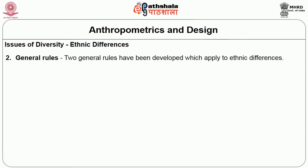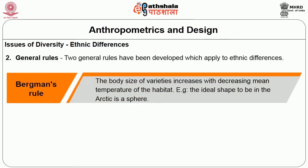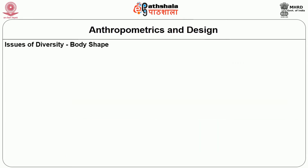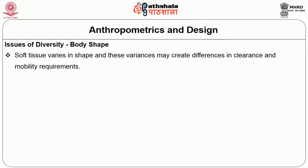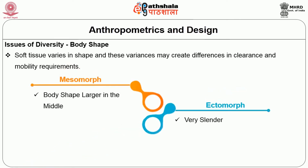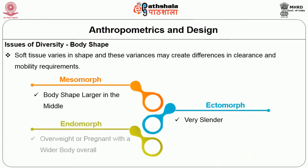When applying general rules to design, consider Bergman's rule: body size variety increases with decreasing mean temperature of the habitat — meaning body size is based on where people live. Allen's rule relates to body shape. There are three body shape categories: mesomorph, endomorph, and ectomorph. Each body shape style interacts differently with anthropometric data and principles in design.